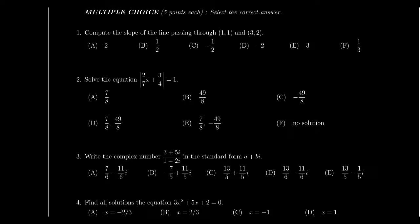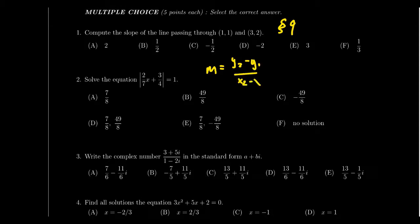Starting with the multiple choice section, question number 1 asks you to calculate the slope of a line passing through two specific points. It will cover Lecture 9, our introduction and review of linear functions. We learned how to solve linear equations and inequalities, how to graph lines, and how to come up with linear equations. The slope formula — m equals y2 minus y1 over x2 minus x1, that rise over run — is a key ingredient.